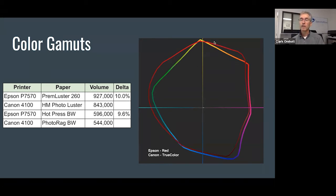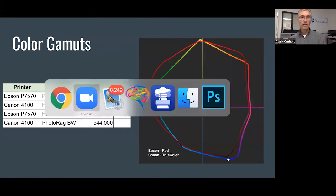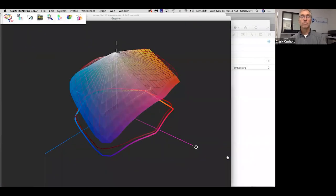You get some benefit in the upper right in the red area. It's worth noting that in the deep, deep blues, even with the violet, we're seeing a little bit of advantage with the Canon.